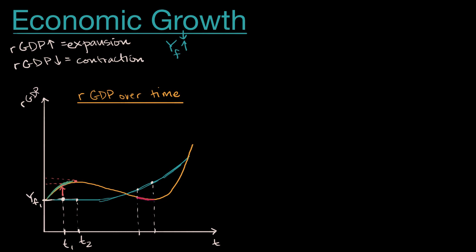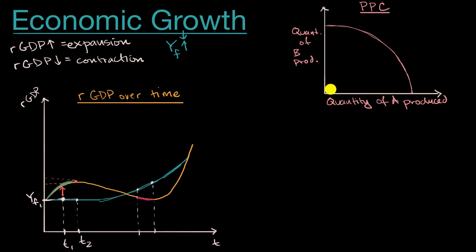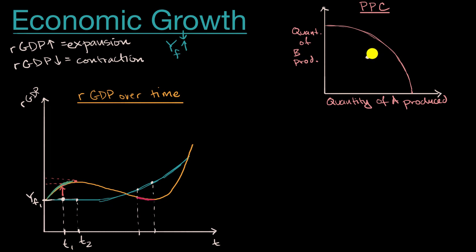To appreciate this, let's look at other models we have studied in economics — the production possibilities curve. The ones we typically see only have two goods or services; a real economy would have millions. But what this shows us is at a snapshot in time, what is the full employment output and the trade-off between goods or services. If we're in a situation where we're behind the production possibilities curve, that is a negative output gap, and it's possible that over time we go from this negative output gap back to the PPC — that would be an expansion.